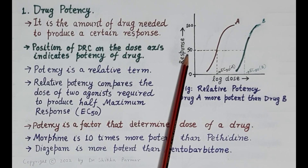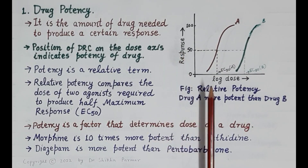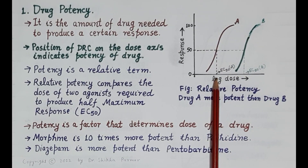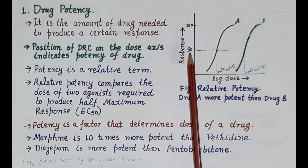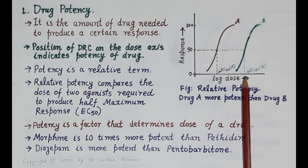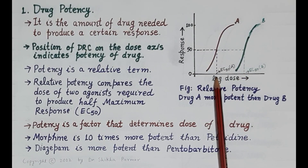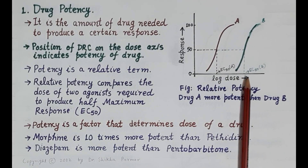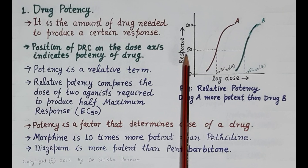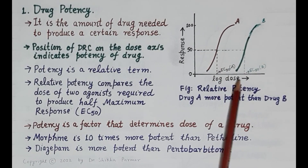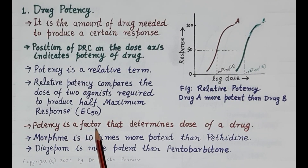On the x-axis is the log dose. The dose of Drug A required to produce 50 percent (half-maximal) response is less compared to the dose of Drug B required to produce the same half-maximal response. Therefore, Drug A is more potent than Drug B. Potency is a factor that determines the dose of a drug; however, higher potency does not mean higher clinical efficacy.